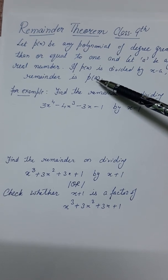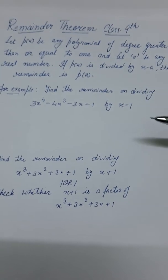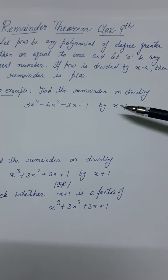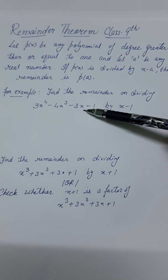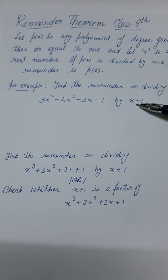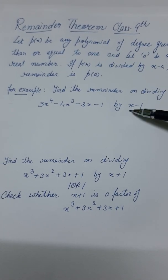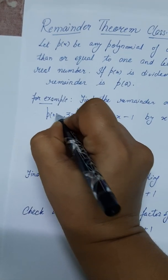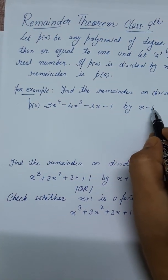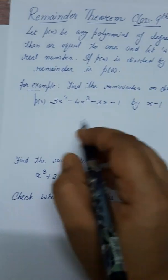Let us take an example. Find the remainder on dividing 3x⁴ - 4x³ - 3x - 1 by x - 1. We have to divide this by x - 1. This is our p(x), and x minus a, so a is 1 here.